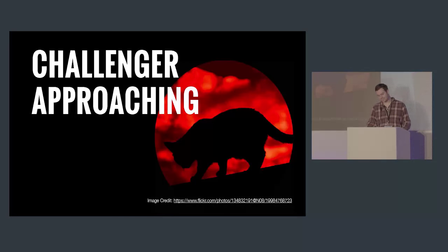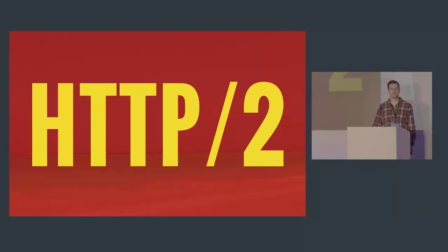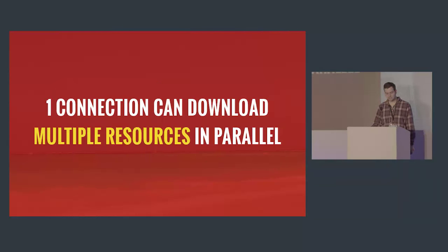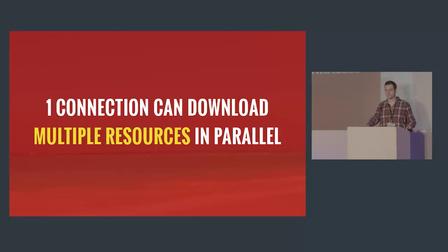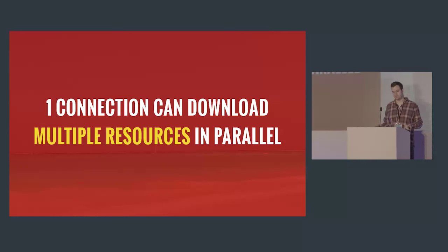There's a challenger approaching: HTTP/2. HTTP/2 allows us to have one connection that can download multiple resources in parallel, so we no longer have a connection per resource and end up queuing resources as we did in HTTP/1. We don't have head-of-line blocking anymore — instead we can multiplex our resources together so they're all going in one stream.